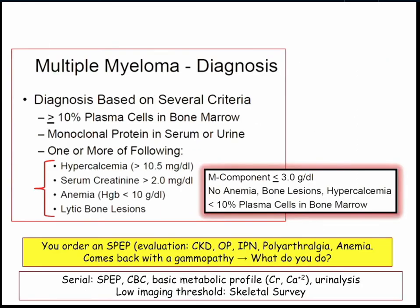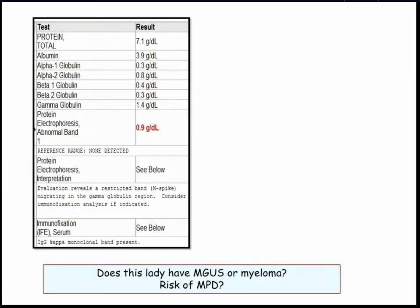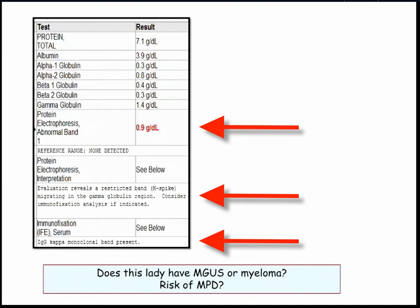So the way it works: you get the SPEP, it comes back with a spike. What are you going to do? You order all these tests to sort out, is it MGUS or myeloma? Here's a patient. I got this protein electrophoresis because she had everything wrong with her, and it came back — a small spike. We said three grams is myeloma. So this is abnormal, and they write here it's an IgG kappa monoclonal — so now I have to go sort this out.